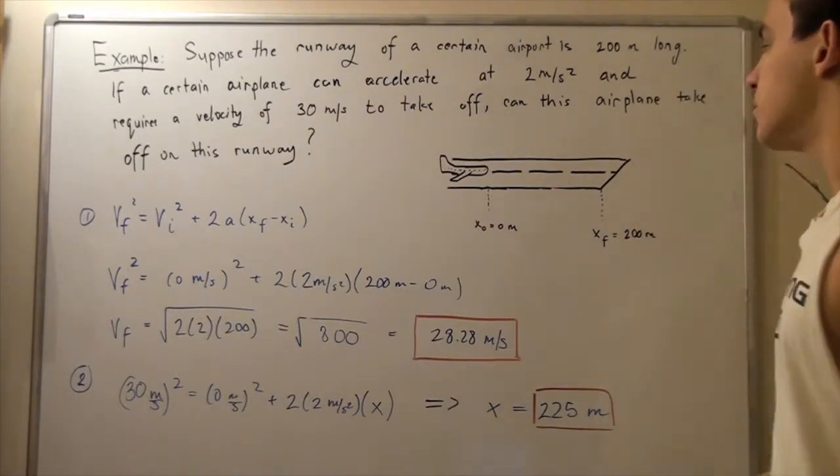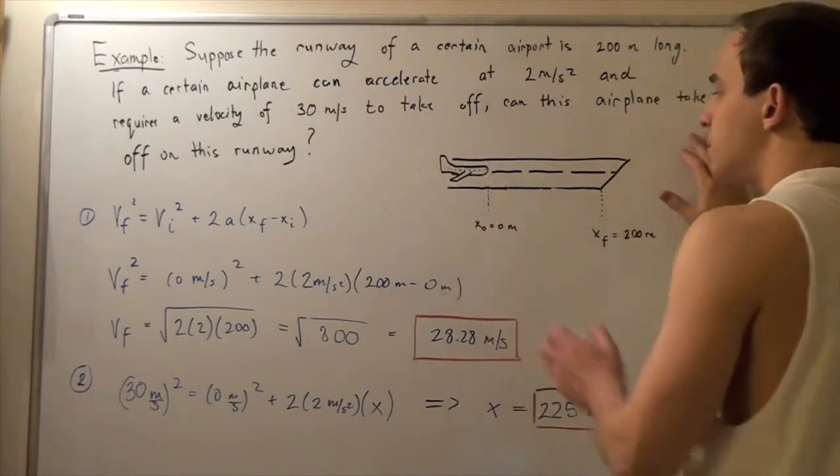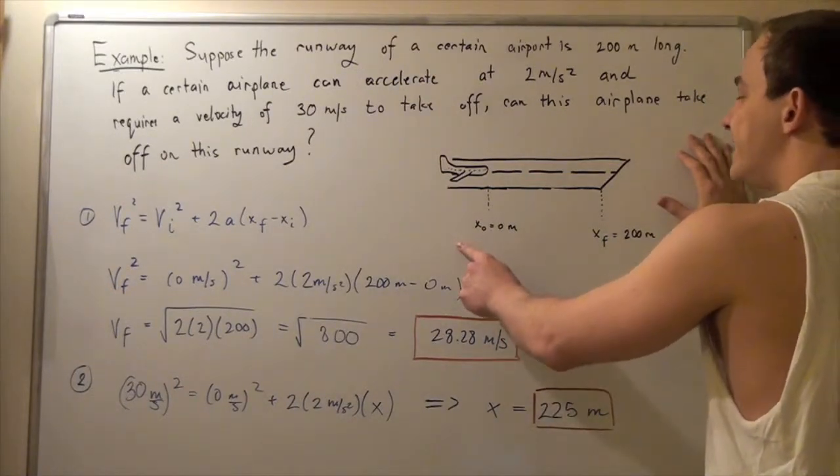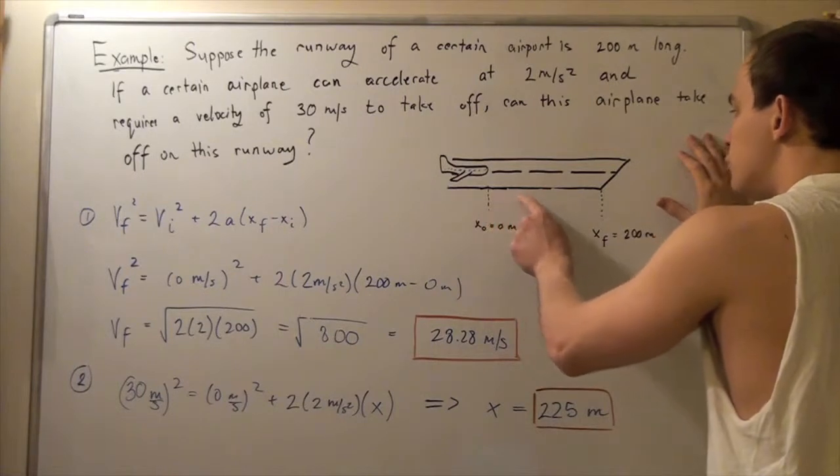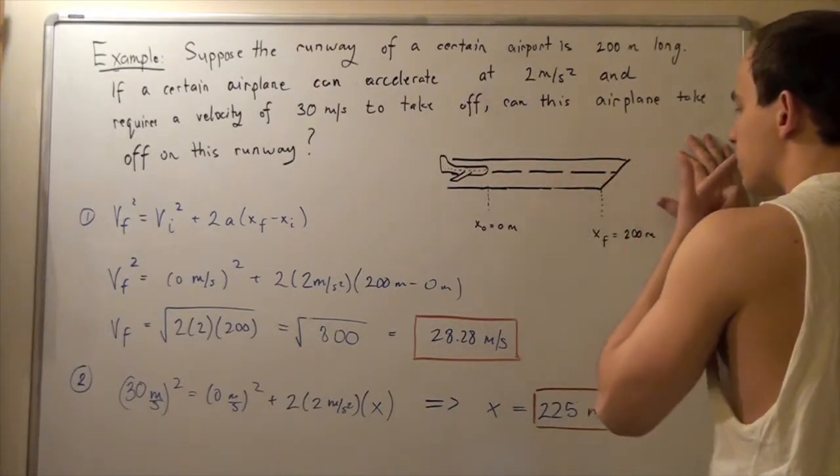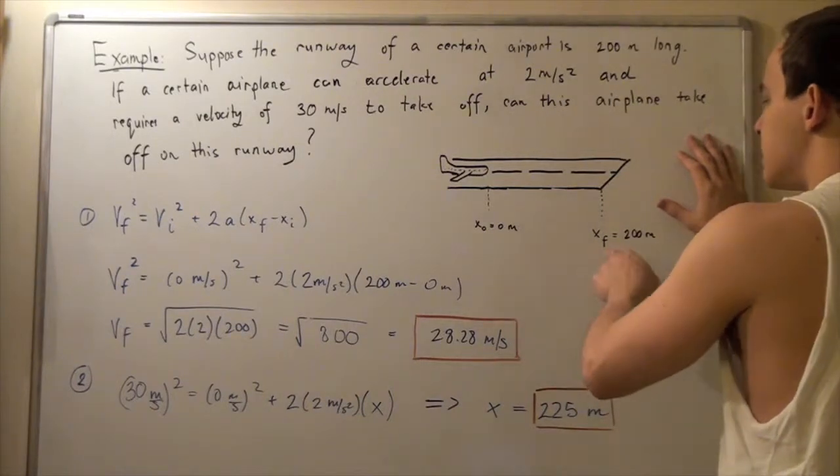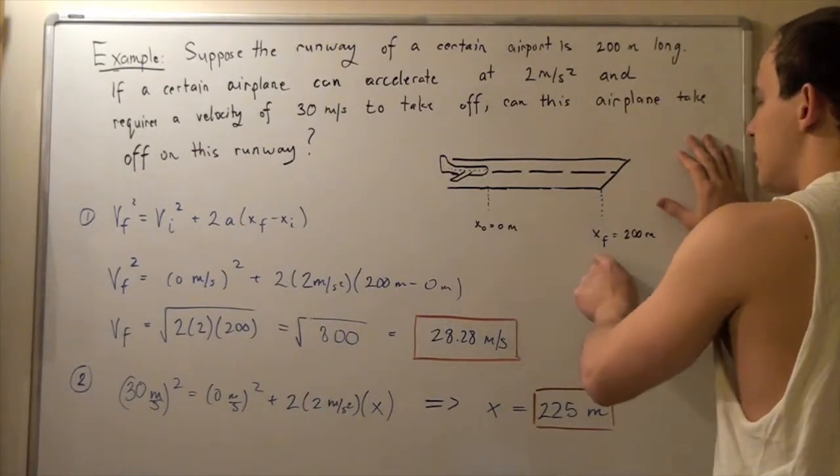Here's our illustration. Suppose we have the airplane at a position of x₀ equals 0 meters, and it needs to travel 200 meters on the runway in our airport. So our displacement from this position to this position is 200 meters long.